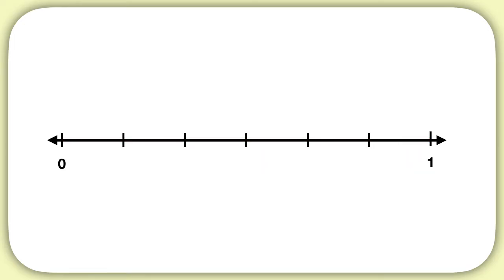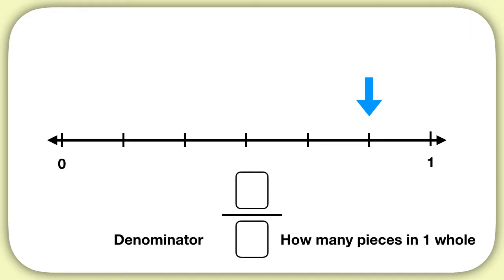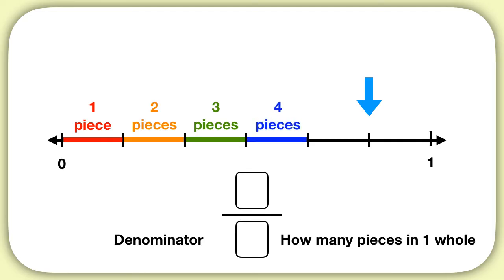Let's say we wanted to figure out what fraction represents this dash on the number line. Remember that fractions have two parts. The part on the bottom is called the denominator — it tells us how many pieces are in one whole. We can count that there are 1, 2, 3, 4, 5, 6 pieces between 0 and 1 on our number line. So that number 6 is our denominator.